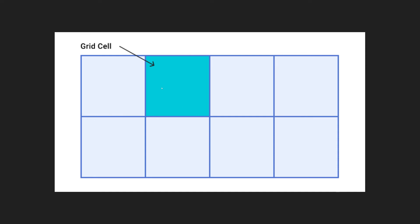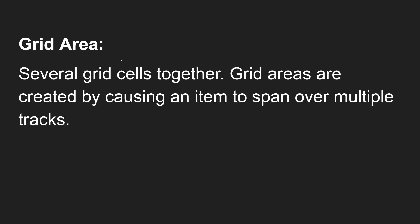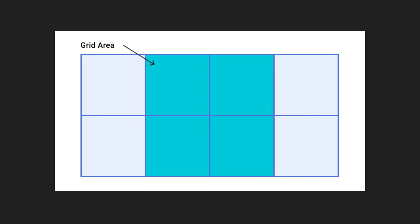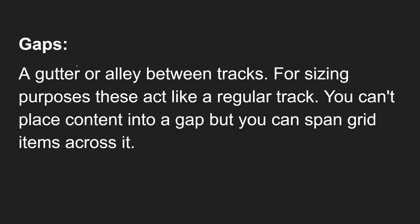Several grid cells together are called a grid area. Grid areas are created by causing an item to span over multiple tracks. Here in the diagram, this larger section spanning multiple tracks is called a grid area. The last terminology is gaps. A gutter or alley between the tracks is called a gap — the space between two column lines or between two row lines.